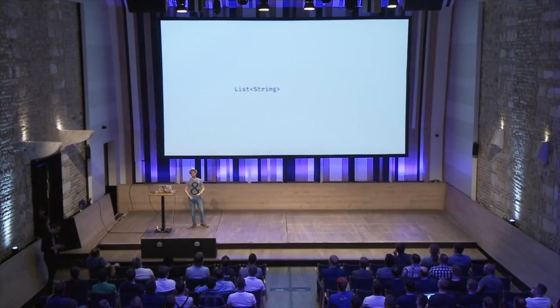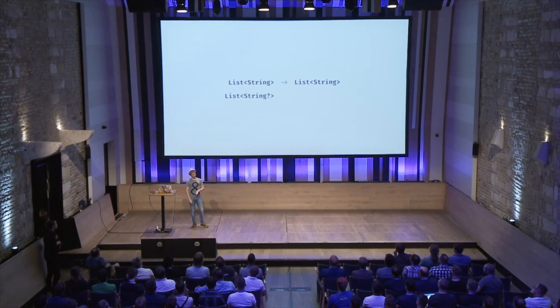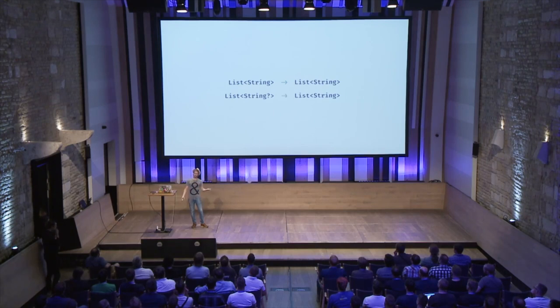What do you see from this API? If in Kotlin you have a list of String, from that side you're going to see a list of String — that's fine. But if you have a list of nullable String, from that API, just using pure Java annotation processing without looking at the metadata, you're going to see a list of String. There's no difference. There's no way to gather the nullability.